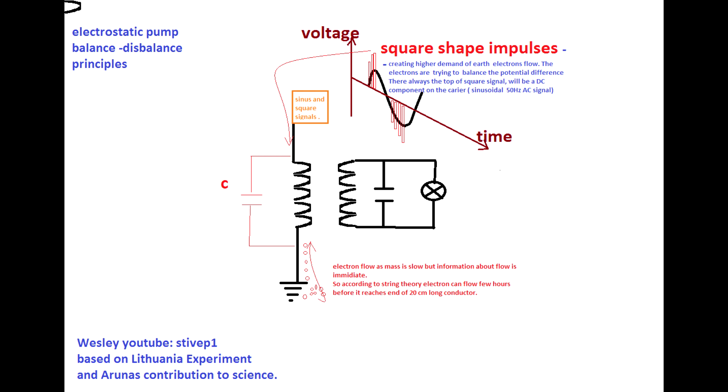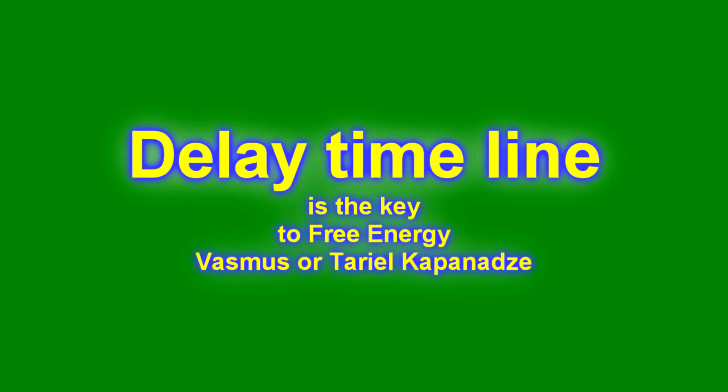Nature wants to go to balance. That's what we can observe everywhere. Whenever we put the electrostatic potential on the top of the C capacitor, the bottom of the capacitor wants to go to the balance. And then the electrons from the ground will be sucked and go to the lower plate.